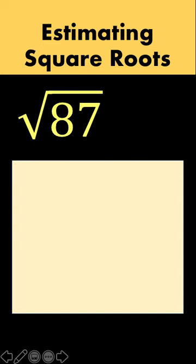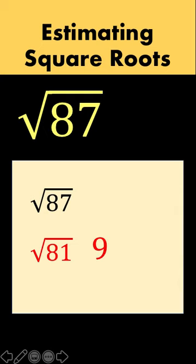If you are asked to find what is the square root of 87, this is how you can do that mentally or at least do that easily. You begin by looking for a perfect square that is lesser than 87. And that number is 81 because the square root of 81 is equal to 9.